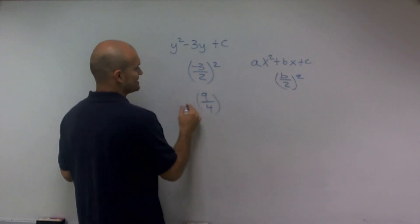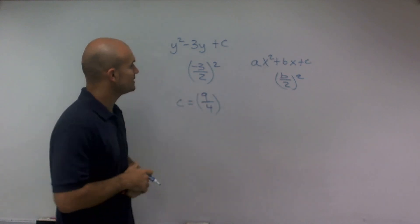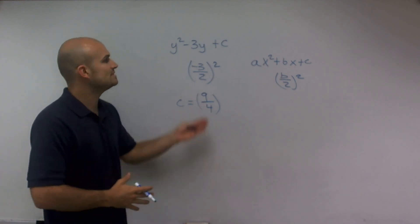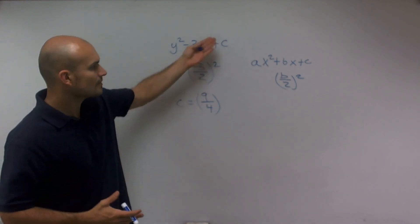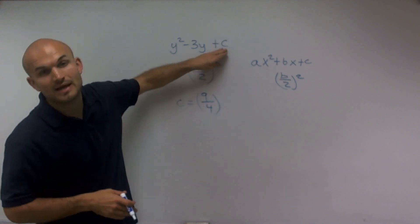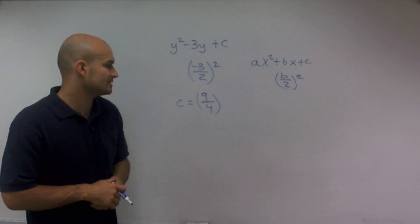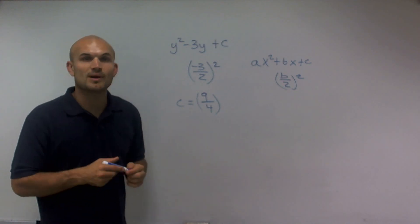Therefore, the value of my c is going to equal a positive 9 fourths. And that's going to now allow us to write a perfect square binomial to help us complete the square. And that is how you solve that problem. Thanks.